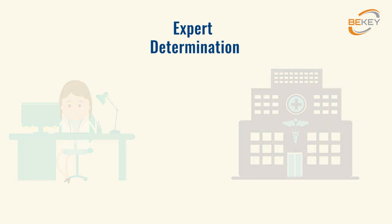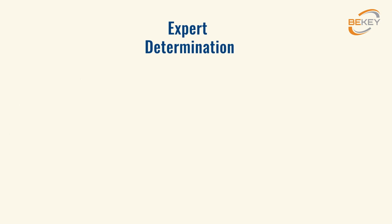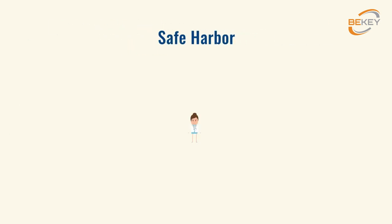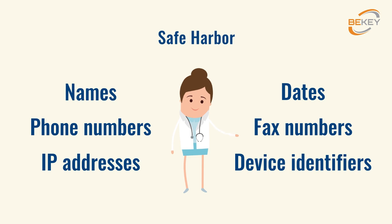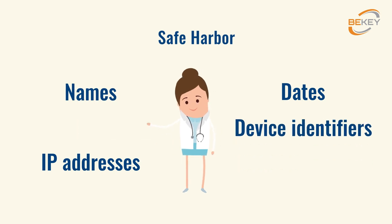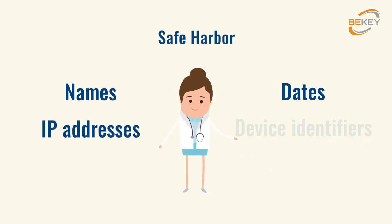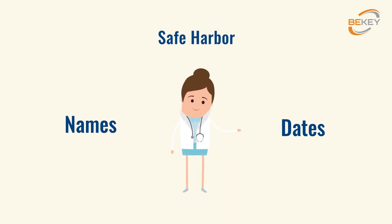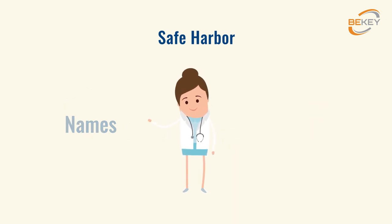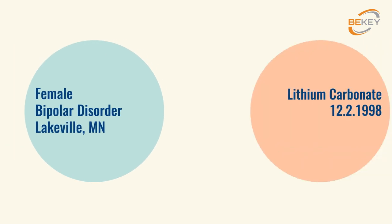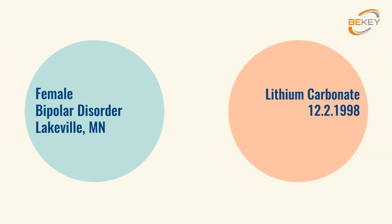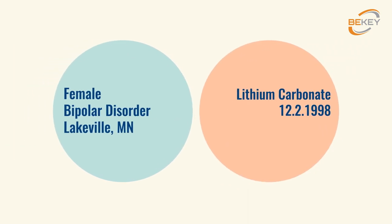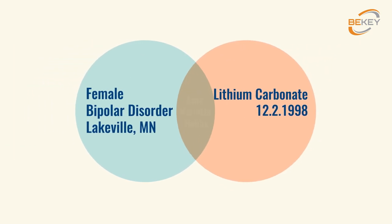The second method is called safe harbor. The point is to invite an expert who will carefully remove everything that can relate to a person. Note that both of these methods, even applied very carefully, can still bring the risk of identification.